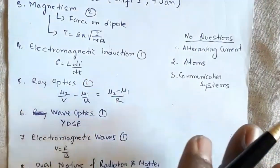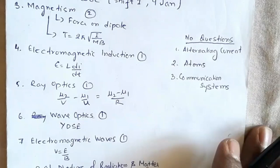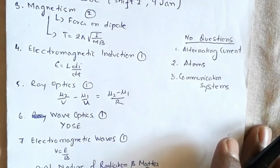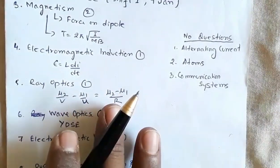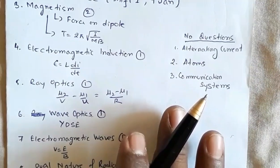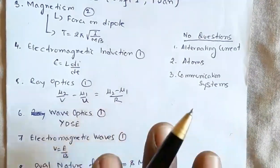This paper was a bit difficult as compared to the morning shift paper of 9 January. But overall if you see, if you have concentrated on NCERT you should be able to solve at least 12 to 13 questions out of these 27 questions.